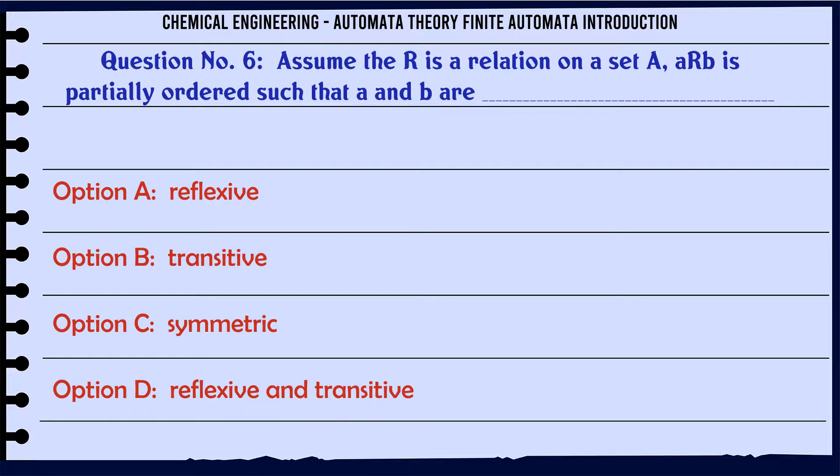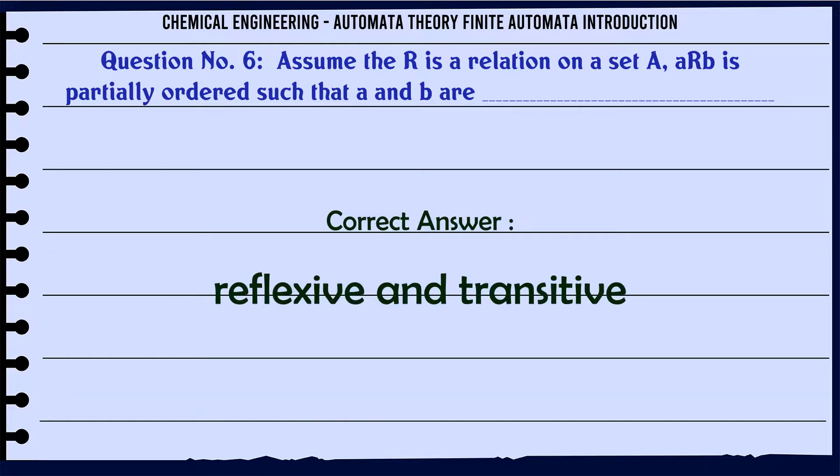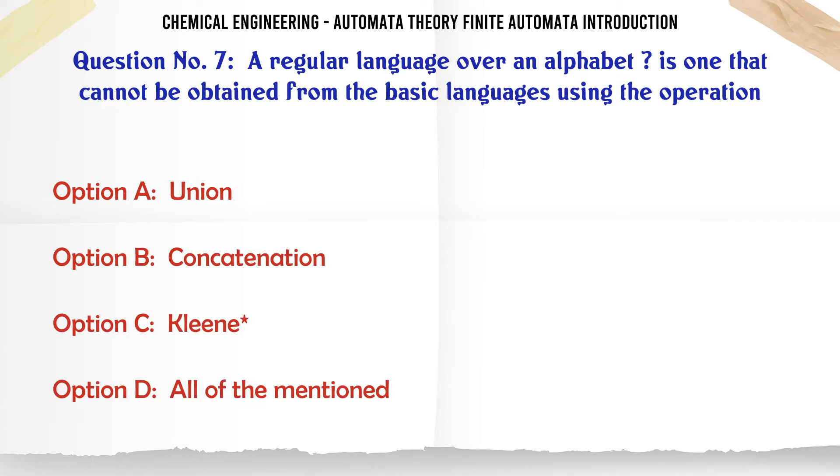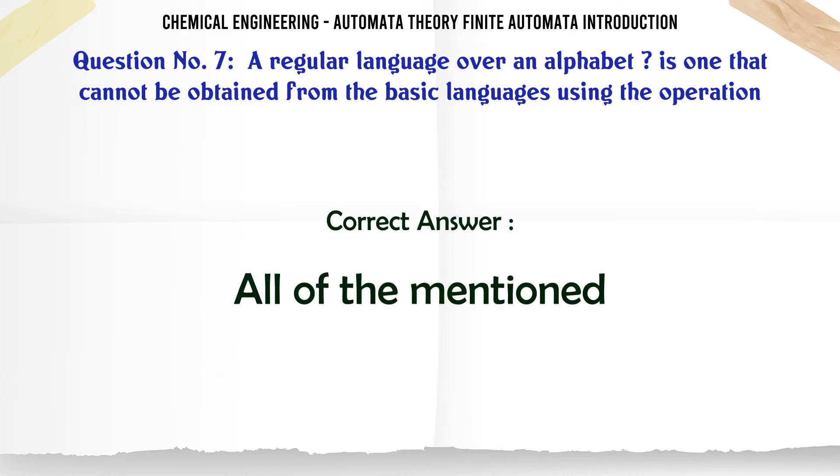The correct answer is Reflexive and transitive. A regular language over an alphabet is one that cannot be obtained from the basic languages using the operation: A: Union, B: Concatenation, C: Kleene, D: All of the mentioned. The correct answer is All of the mentioned.